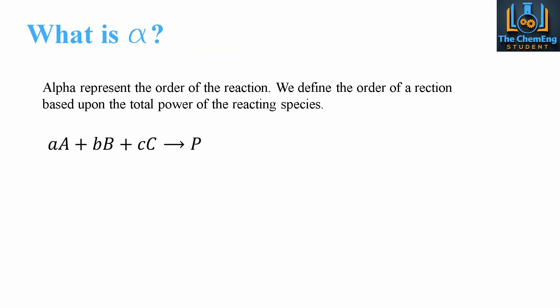The alpha here represents the order of the reaction. We define the order of a reaction based upon the total powers of the reacting species. When we talk about the order, we discuss this at length in our online course on reactor design and mass and energy balances.